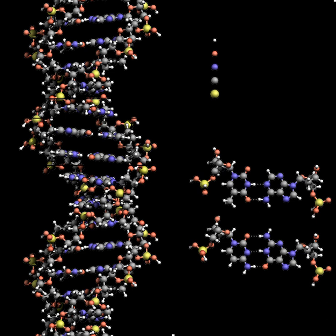The complementary nitrogenous bases are divided into two groups: pyrimidines and purines. In DNA, the pyrimidines are thymine and cytosine, while the purines are adenine and guanine.